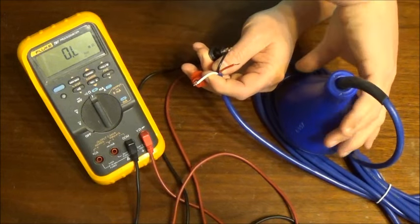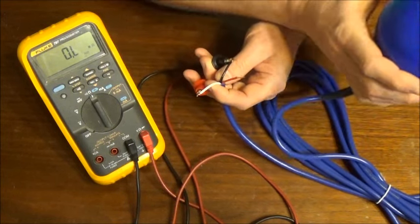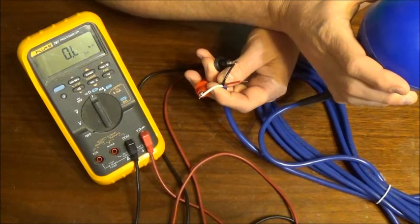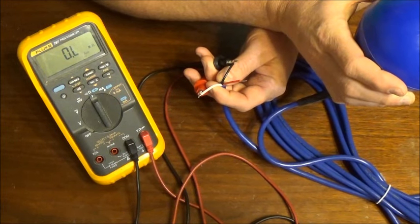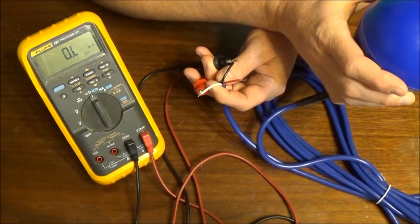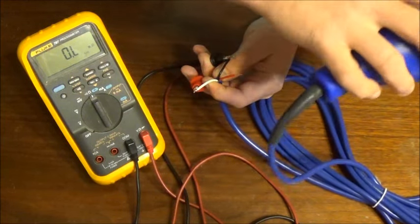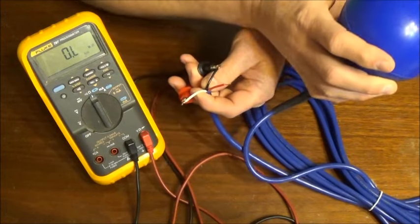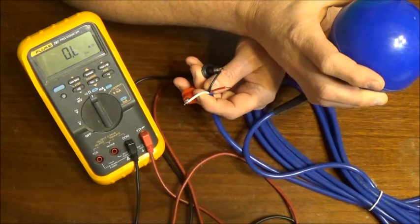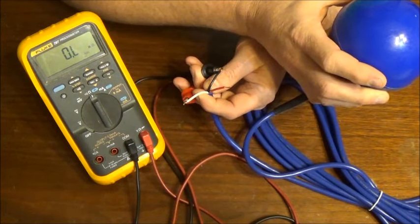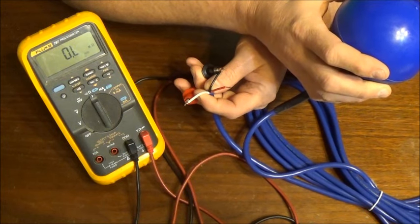If we toggle the float to what should be the opposite condition, that state should change to a short. As you can see, you can hear the switch toggling. This meter is reading the same either way, indicating that the float switch is bad.